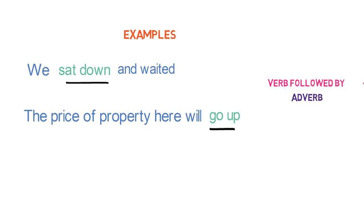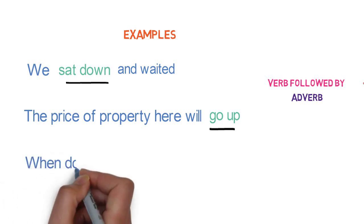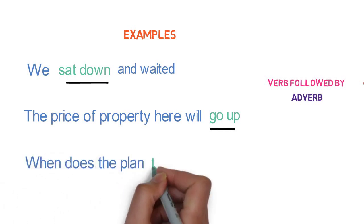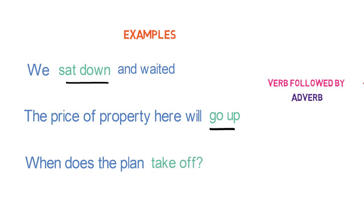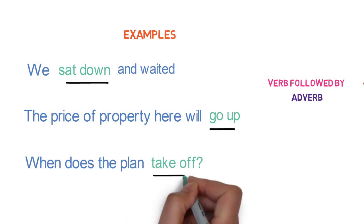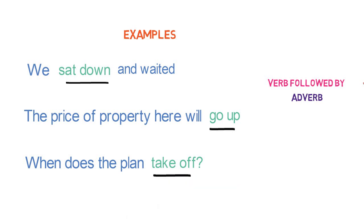Let's look into the last example of a phrasal verb containing an adverb. 'When does the plane take off?' Here, 'take' is the verb and 'off' is the adverb. The whole phrase 'take off' is a phrasal verb containing an adverb. All these are examples of phrasal verbs having adverbs.